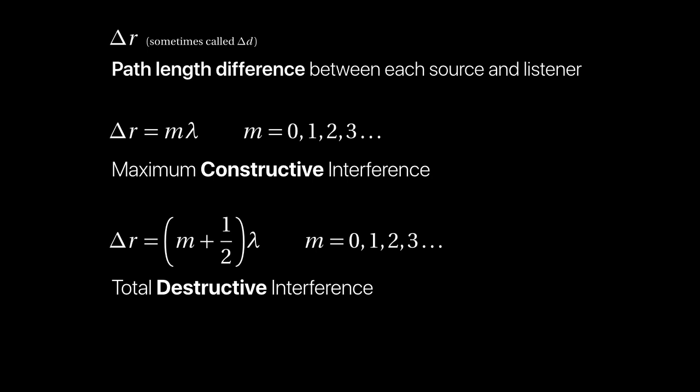On the other hand, if the path length difference adds up to half a cycle difference between the two waves, we get destructive interference. Mathematically, delta R equals (m + ½) times lambda, where m is once again an integer. The possible path length differences for total destructive interference are half lambda, one and a half lambda, two and a half lambda, three and a half lambda. In each case, the path length difference is half a cycle, so the displacements of the two waves exactly cancel — when one wave is going up, the other is going down.